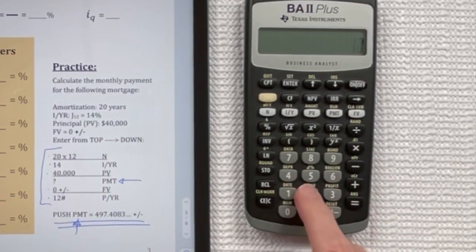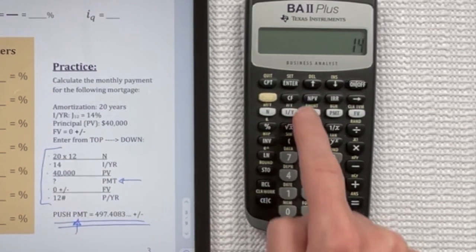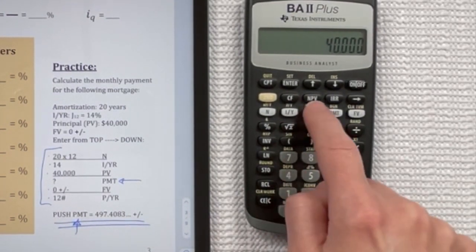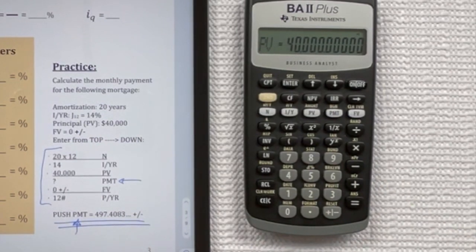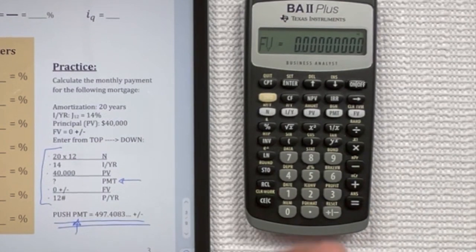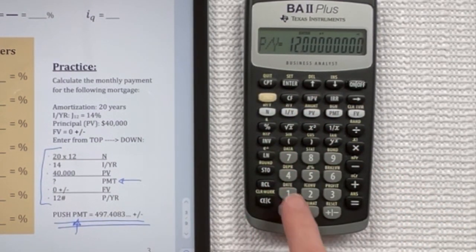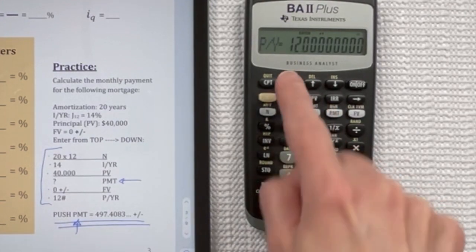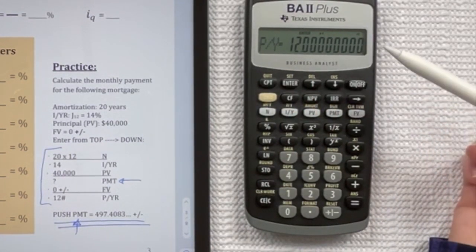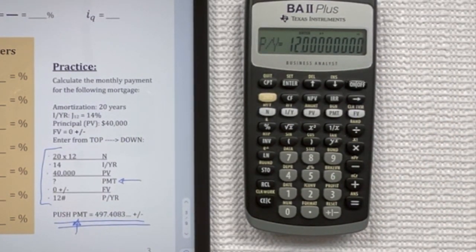I'm going to multiply 20 times 12 equals and push N. 14 IYR, 40,000 PV. Skip the payment. That's what you're trying to find. Zero plus minus future value. And then we're going to go into our second PY, and we would press 12 enter. Now it already was 12 that was in there, so you wouldn't need to change it. But I just did that to show you how you need to do it.